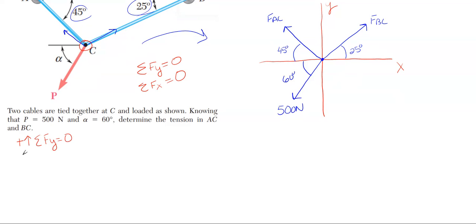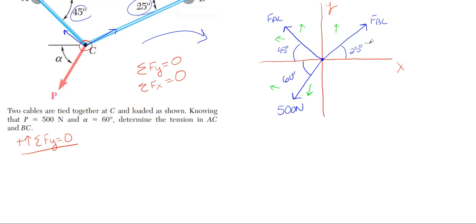Let's write out these equations, starting with the Y direction. Upward vertical is positive and downward direction is negative. Since all our forces are at angles, each force will have components in the X and Y directions. The 500 newton force is going down and to the left. FAC is going up and to the left. FBC is going up and to the right, so its Y component will be upward and its X component will be to the right.